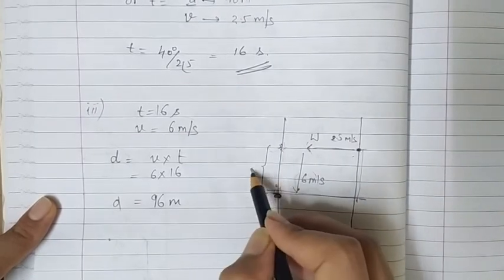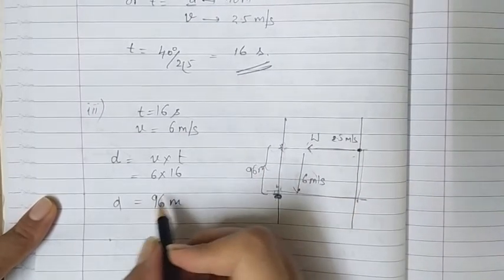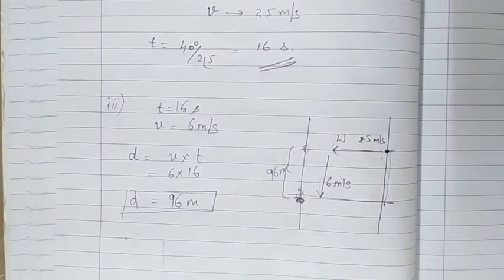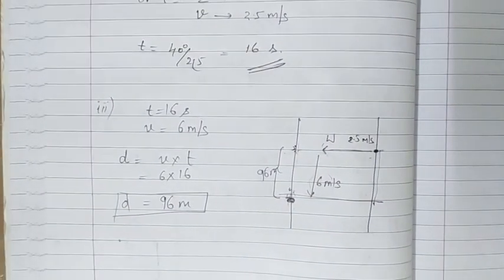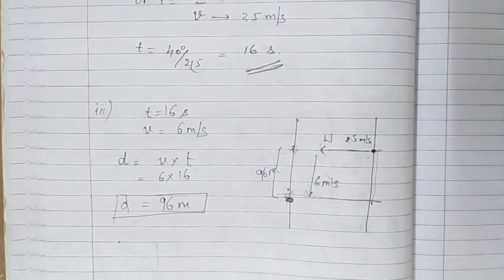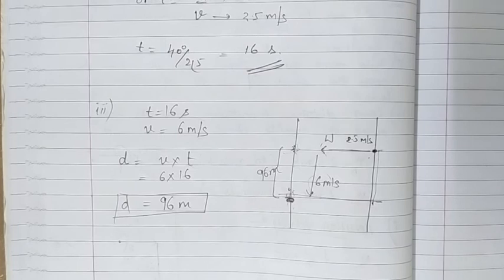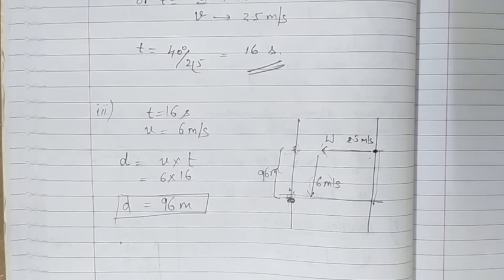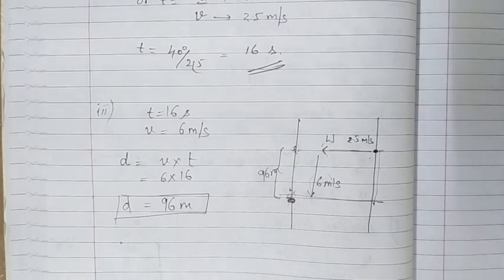This is how we can solve a riverboat problem easily by plotting the diagram. The diagram is the key — if you make the diagram correctly, it is very clear how to solve the problem and it will never be wrong. Practice it further. Stay tuned and keep studying. Thank you.